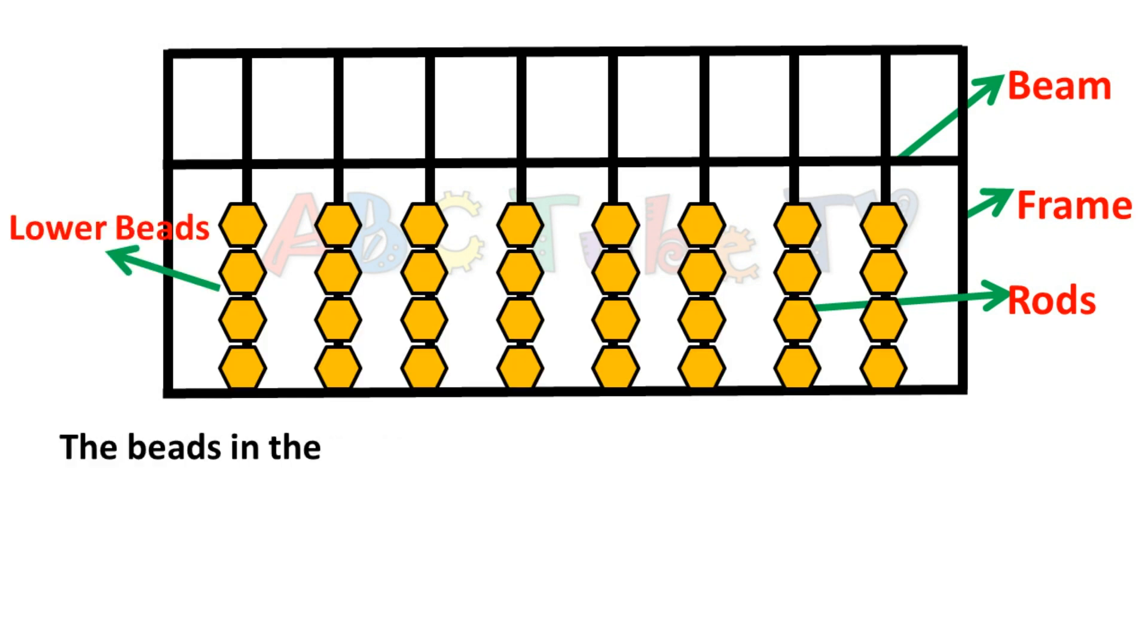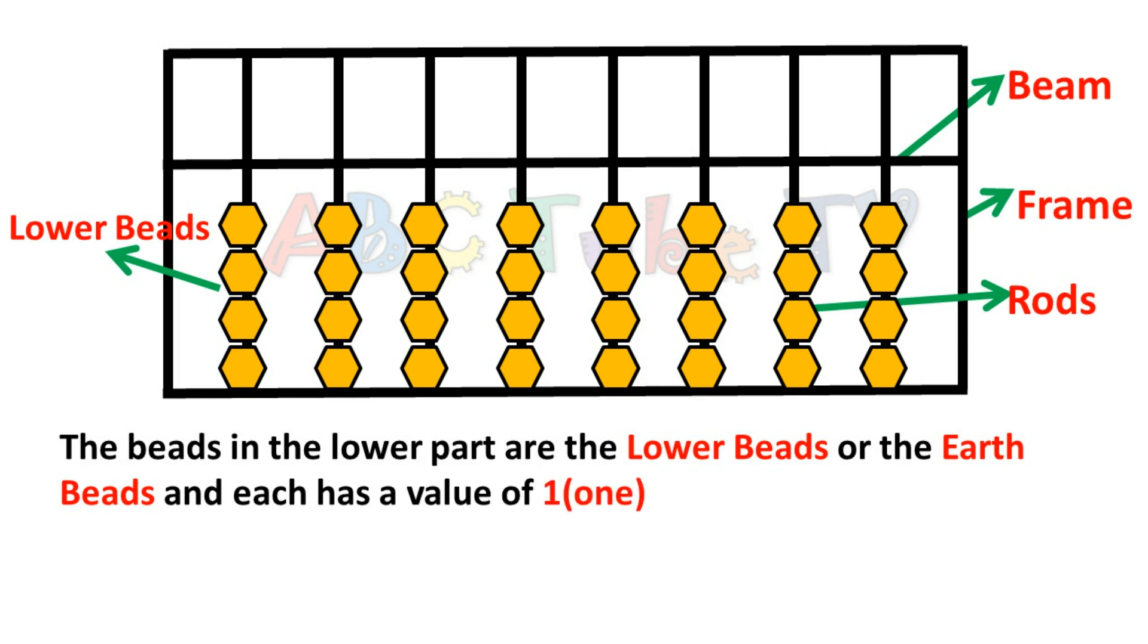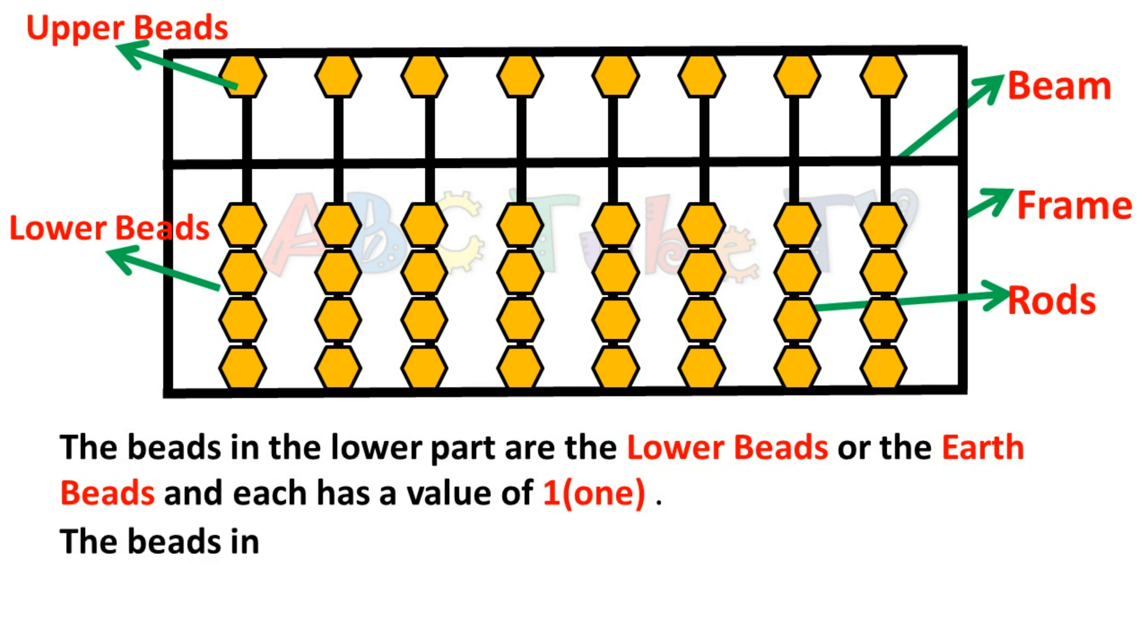The beads in the lower part are the lower beads or the earth beads and each has a value of 1. The beads in the upper part are the upper beads or the heaven beads and each has a value of 5.